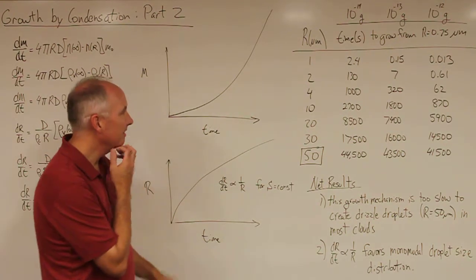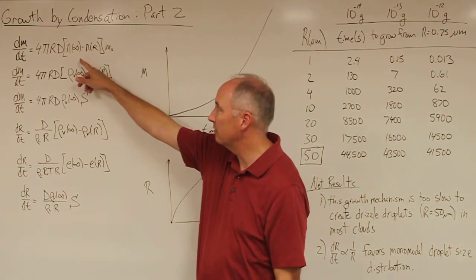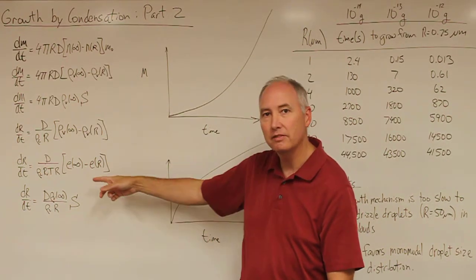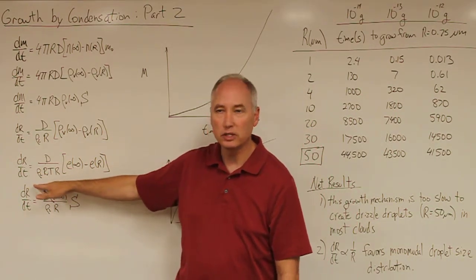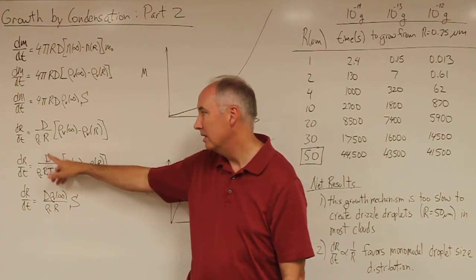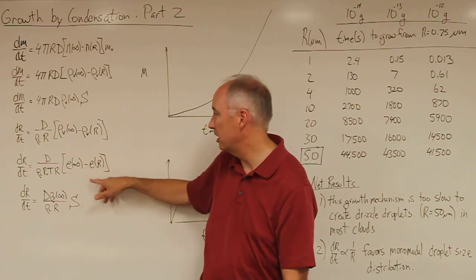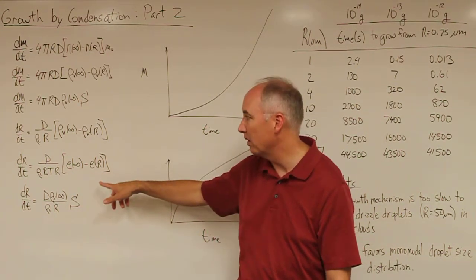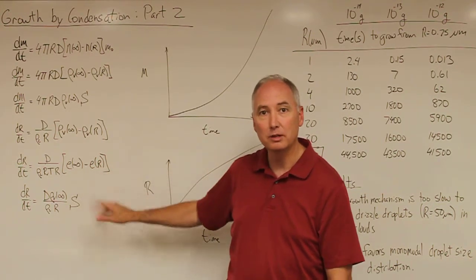If you want to figure out what the mass of the droplet is as a function of time, or more importantly what the radius of that droplet is as a function of time, you actually have to integrate these equations. You need to know the temperature and the environmental supersaturation and how the Kohler curve changes for that individual particle, so the integration is actually quite complex and can really only be done numerically.